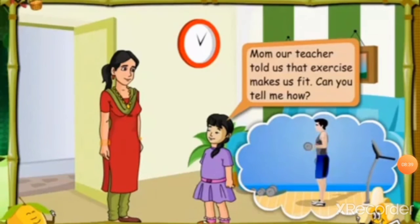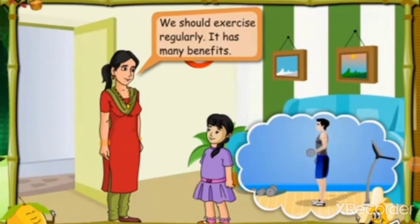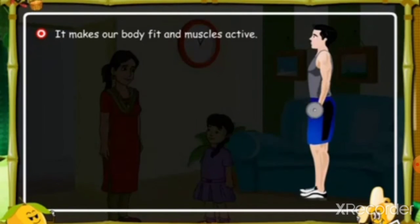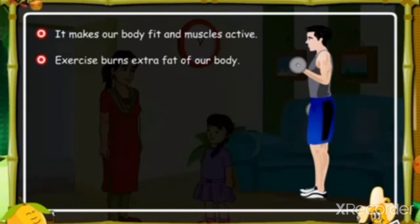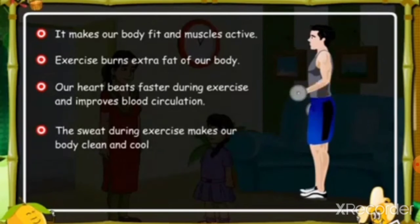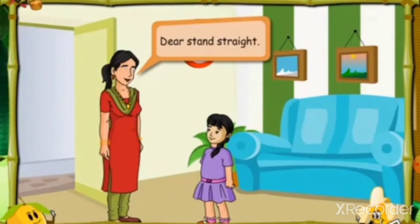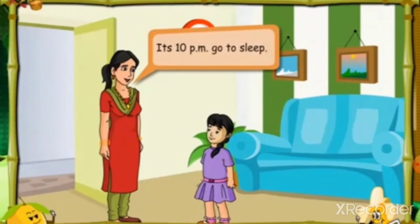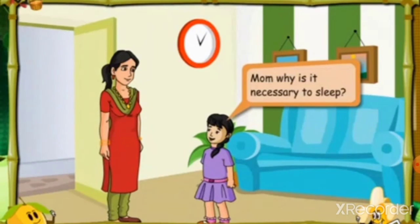Exercise is also very important. Regular exercise and playing outdoor games makes our body fit and muscles active. Exercise burns extra fat from our body. Our heart beats faster during exercise and improves blood circulation. The sweat during exercise makes our body clean and cool. Posture means body position. It is important to keep our backs upright while standing or sitting, because incorrect posture over a longer period of time can lead to pain in joints and muscles.